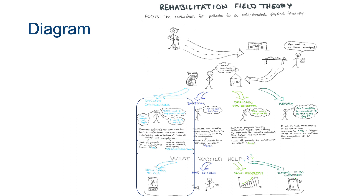The diagram also integrates competence and motivation as concepts from self-determination theory. On the bottom it highlights paths for design — for example, to show more clearly what to do when doing exercises at home. This example is presented as a patient journey; however, there's no fixed diagram structure. Field theories are really flexible in the way that they can be visualized to fit a specific project.